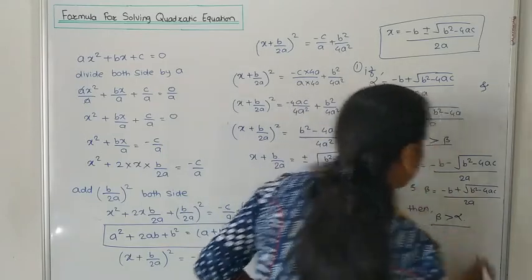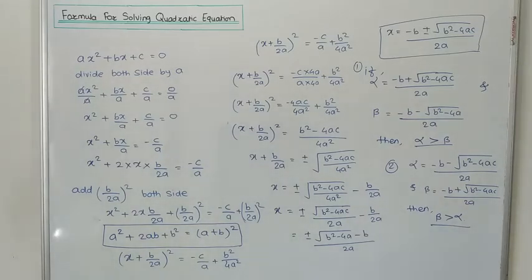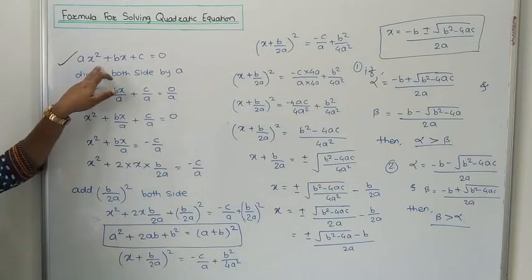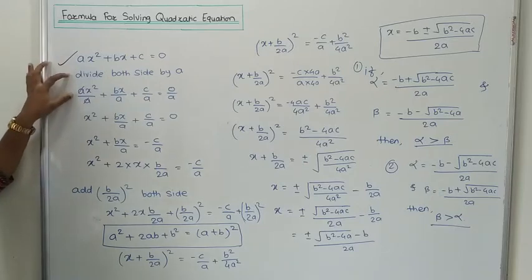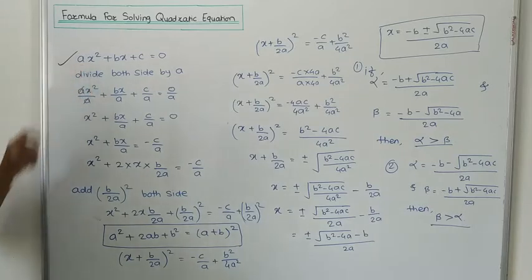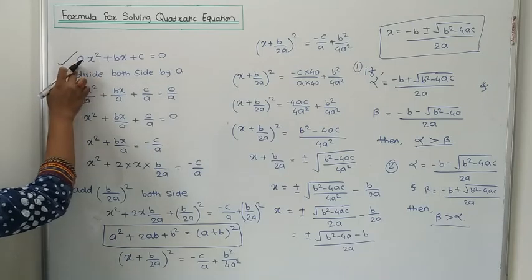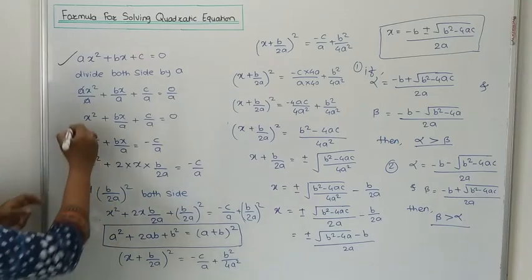These are the two conditions we should consider going ahead. Just recall what we have done up to this point: we proved the formula for solving the quadratic equation. For the first step, we used the standard format AX² + BX + C = 0. Then we divided throughout by A because we needed to cancel the coefficient of X².